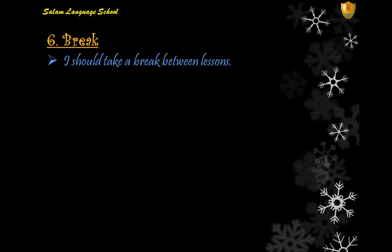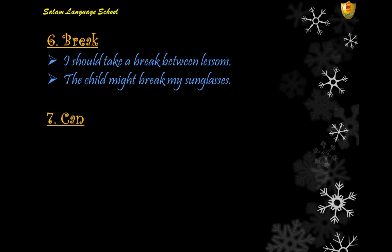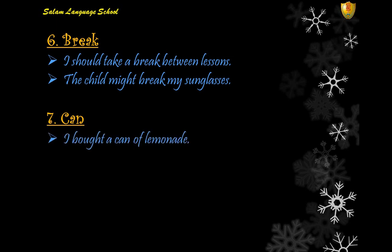Number six: the word 'break' can be a noun or a verb. For example: 'I should take a break between lessons' — noun. 'The child might break my sunglasses' — verb. Number seven: 'can' can also be a noun or a verb. 'I bought a can of lemonade' — noun. 'I can swim well' — verb.